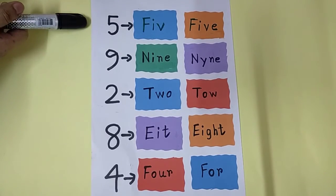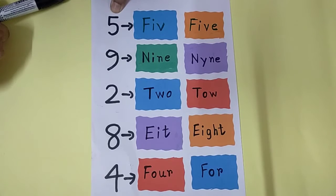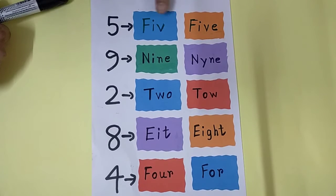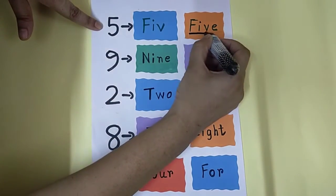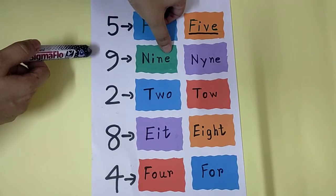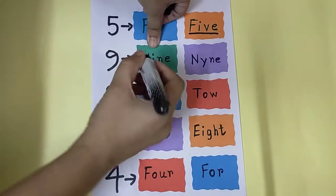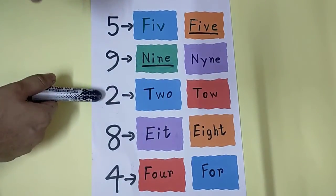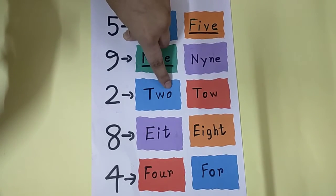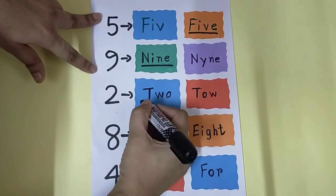Can you see the numbers here? Now, here you have to pick out the correct spelling. What number is this? This is five. Which one is the correct spelling? F-I-V-E or F-I-V-E — which one? The orange one. Very good. The next one is nine. Which one is correct? N-I-N-E or N-Y-N-E — green one or purple one? Green one. Good job. Now, what number is this? This is two. Which spelling is the right answer? T-W-O or T-O-W? T-W-O. Very good, you are learning very fast.